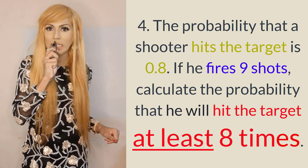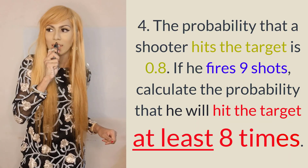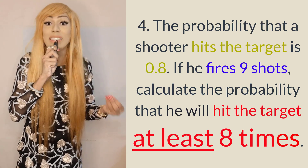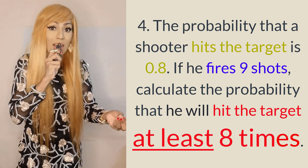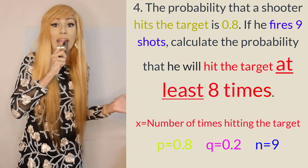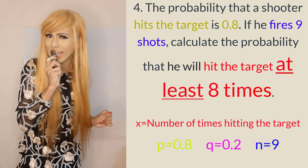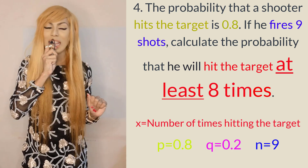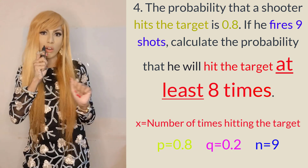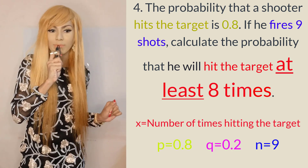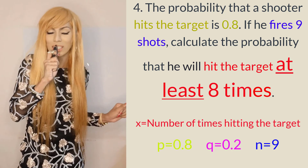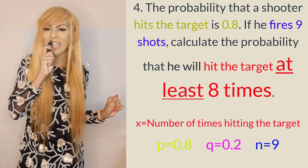The probability of a shooter hitting a target — from that we know X is the number of times hitting the target, P = 0.8, and Q = 1 minus 0.8 = 0.2. If he fires 9 shots, N = 9. Find the probability that he will hit the target at least 8 times.